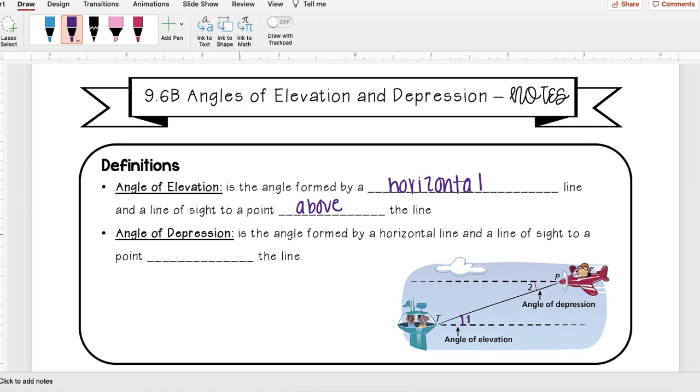Angle of depression, on the other hand, is the angle formed by a horizontal line and a line of sight to a point below the line.